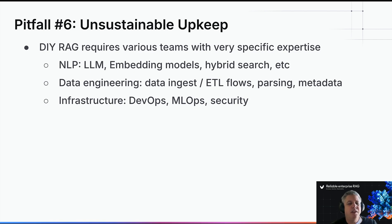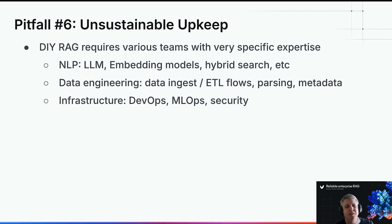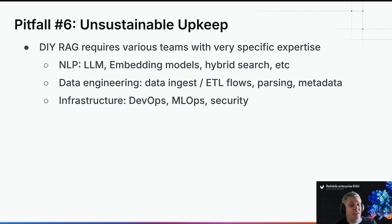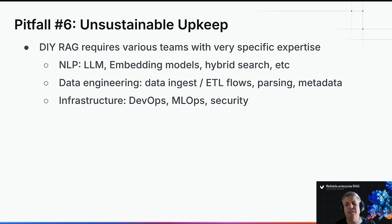Number six is unsustainable upkeep. RAG stacks require a pretty unique set of skills that evolves quickly. If you build it yourself, you need experts in LLMs, experts in embedding models, experts in hybrid search — all different areas of expertise that aren't easy to find. You need data engineering expertise for ingest, ETL flows, PDF parsing, metadata management. You need DevOps and SREs to keep the system up and running, plus security experts. It's not always easy to find and retain those resources as a separate team to continuously maintain the system for all your generative AI use cases.